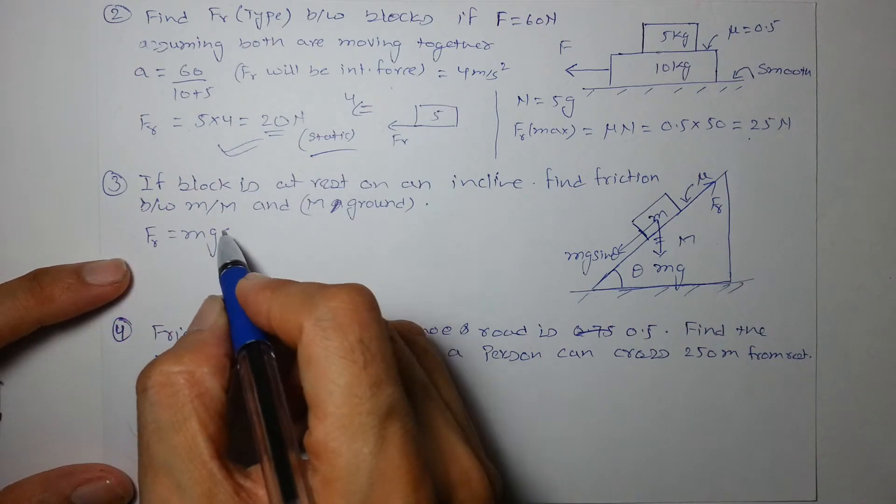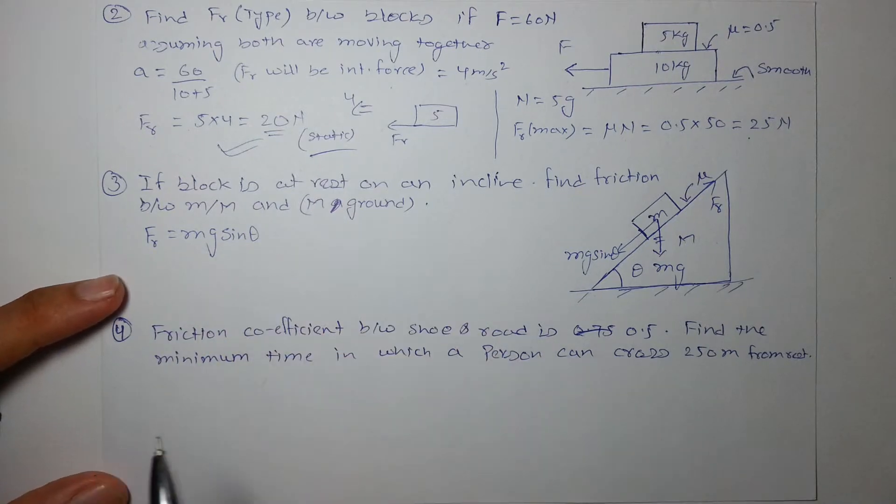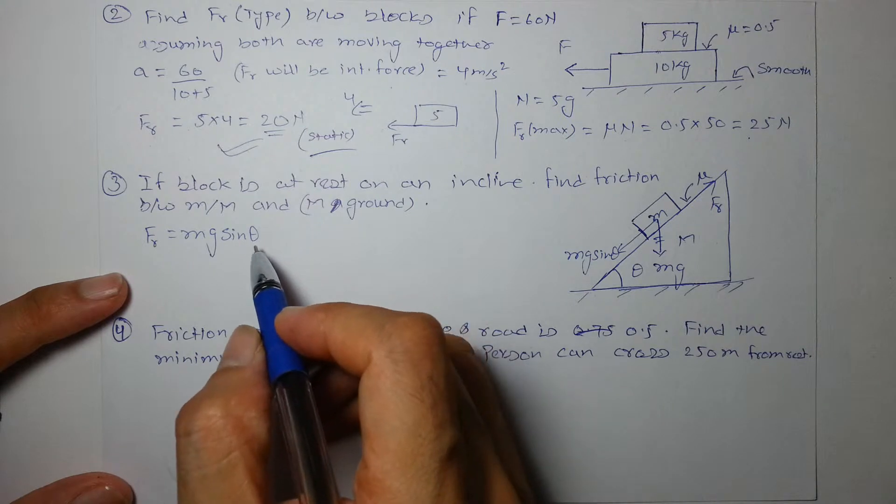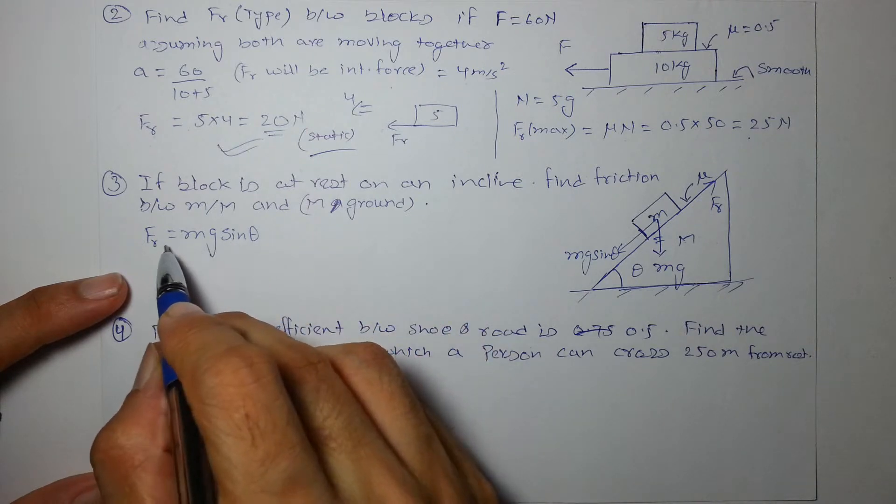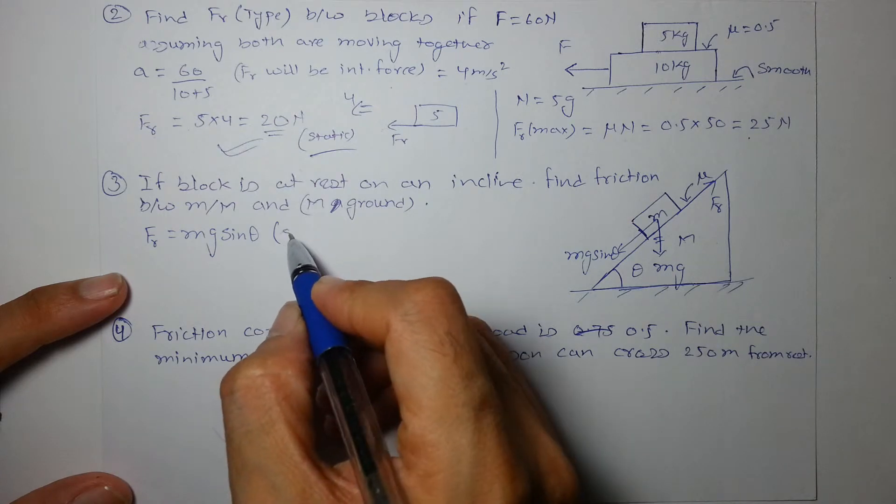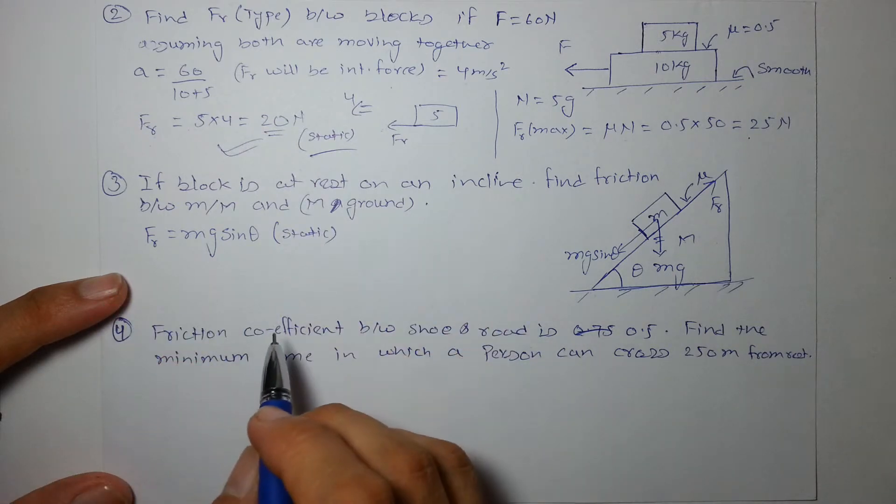In this case, again the friction is not always mu N. It is mu N only in limiting cases. In all other cases of static friction, friction is just sufficient to balance the force which tries to move it and it is static in nature.